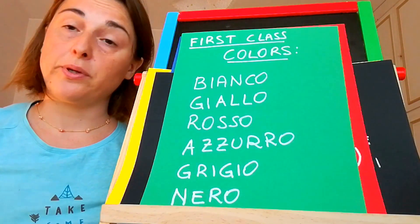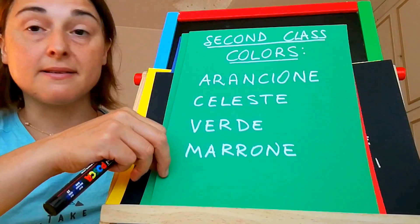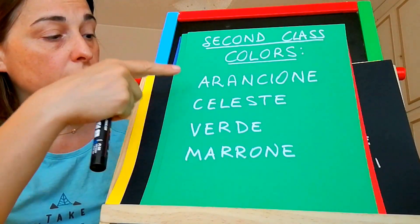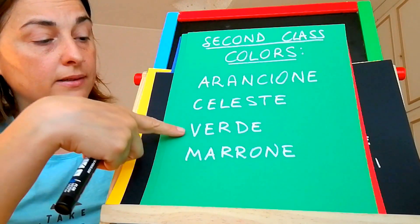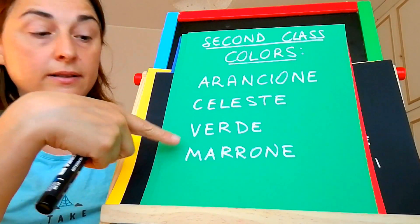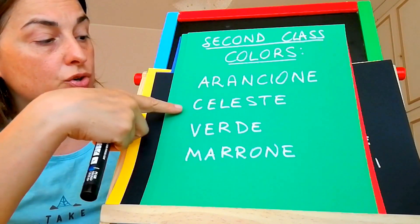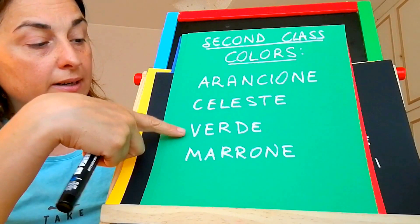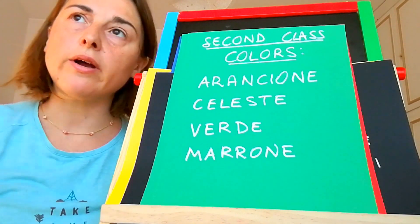Finally, we have other colors that are under the second class, like arancione, celeste, verde, and marrone — orange, light blue, green, and brown.